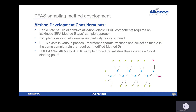They came up with some considerations for the method. PFAS semi-volatile is particulate in nature, so they said they would need an isokinetic Method 5 type approach. A sample traverse would be required because of the particulate nature of the compound. PFAS exists in various phases, so they would need a sample train where different fractions can be collected. That sounded a lot like a modified Method 5 train.